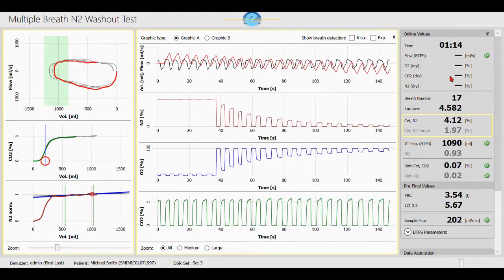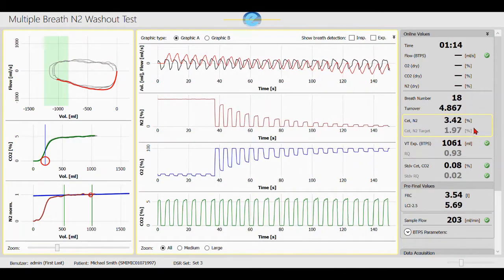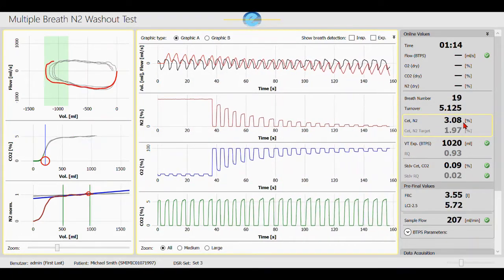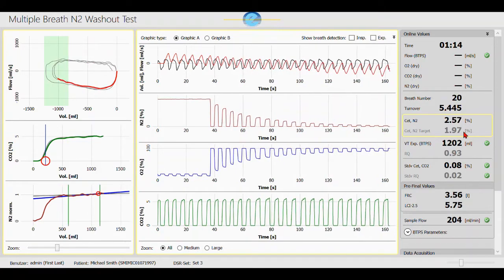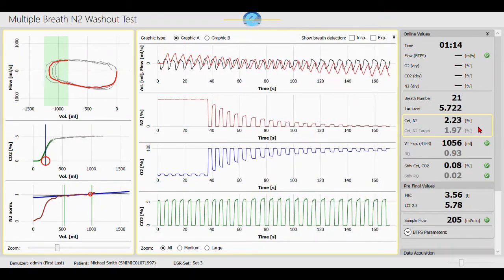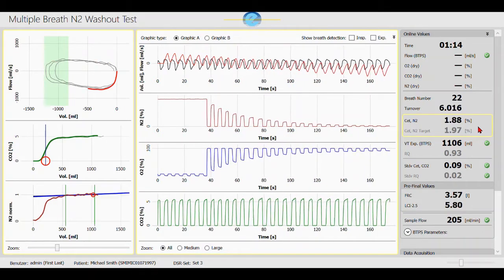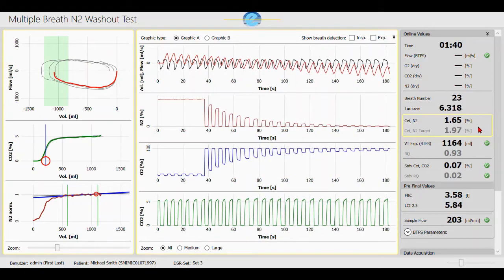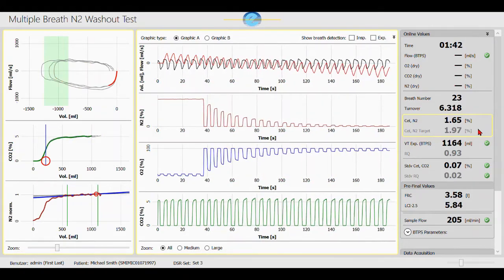On the right side of the screen, we can follow the online values. In the yellow frame, we see the current end tidal nitrogen concentration and the target nitrogen concentration. The exhalizer completes the test automatically as soon as it has recorded three breaths below target, which is typically just below 2% end tidal nitrogen.